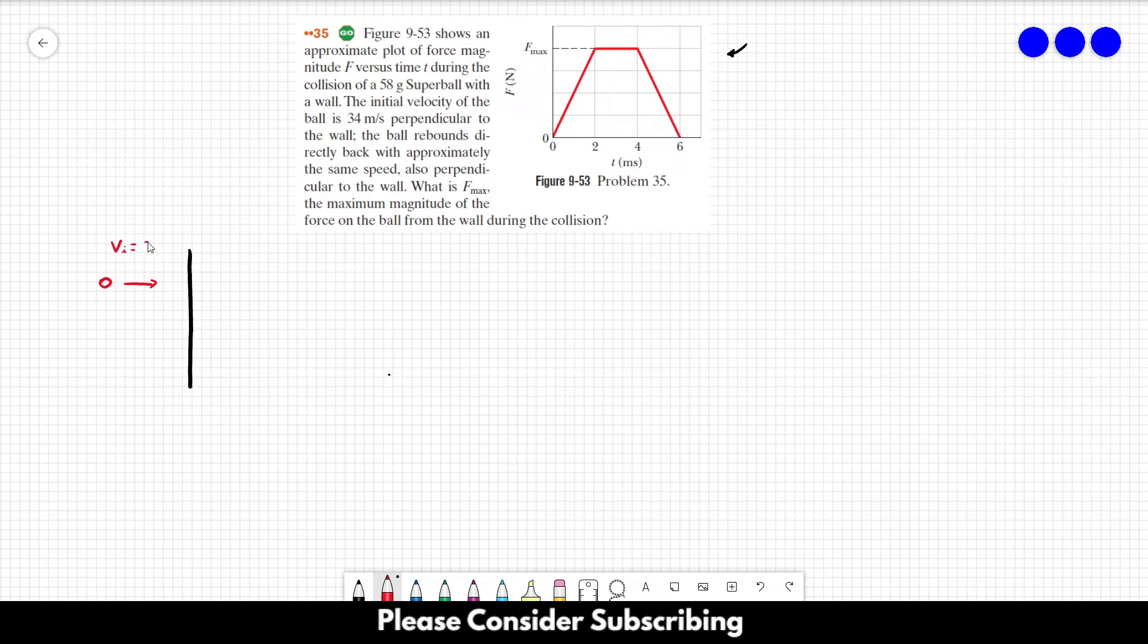So the ball hits the wall and starts going in the opposite direction. Its final velocity is equal to minus 34 meters per second because it's the opposite direction. That's why we have the negative sign.